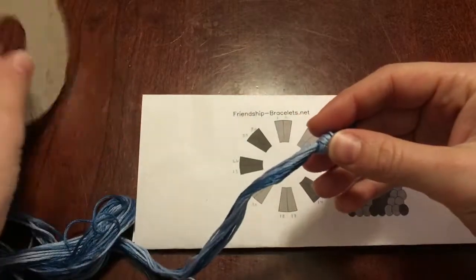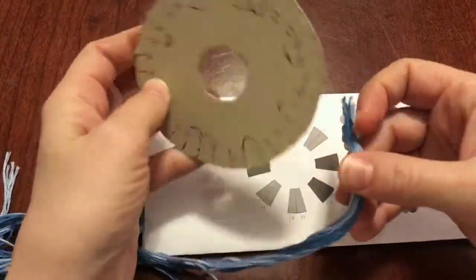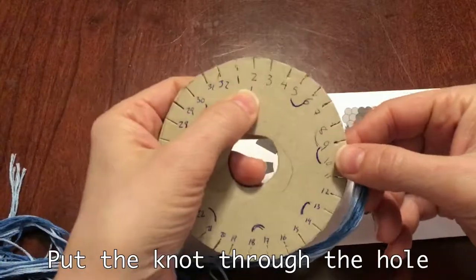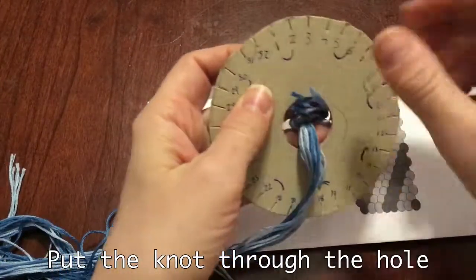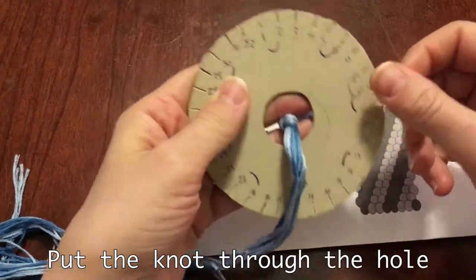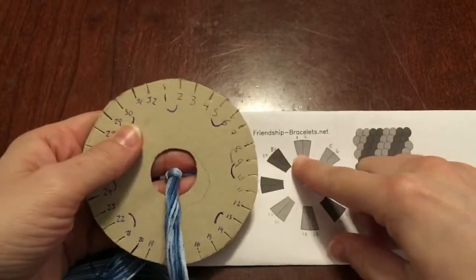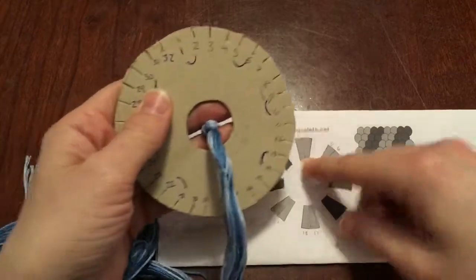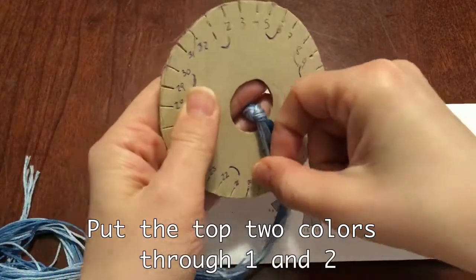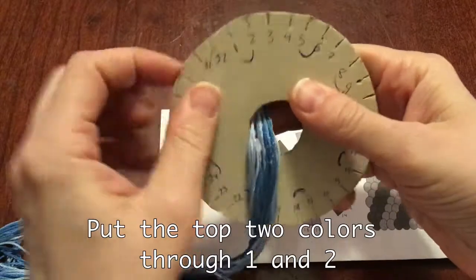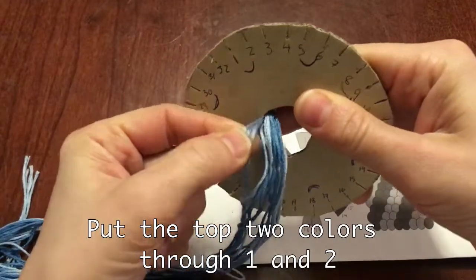Take your string and your disk. Find the top and put your knot through the hole. We're then going to set up our disk based on our pattern. The top two are both light blue, so take light blue strings and put them through the slots marked one and two.